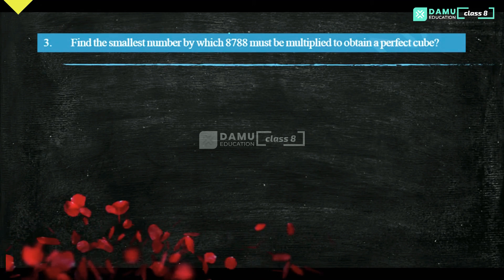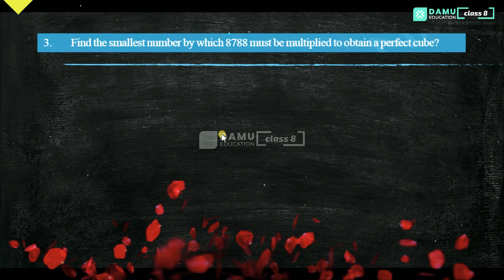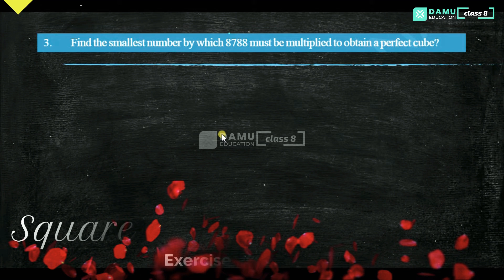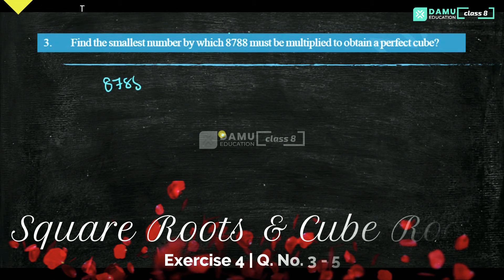Our next question is: find the smallest number by which 8788 must be multiplied to obtain a perfect cube. First of all, we have to check if it is a perfect cube or not.